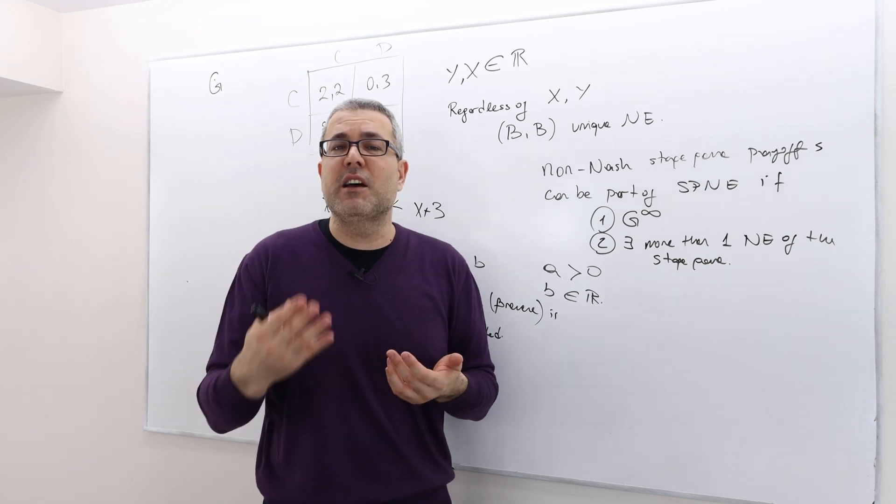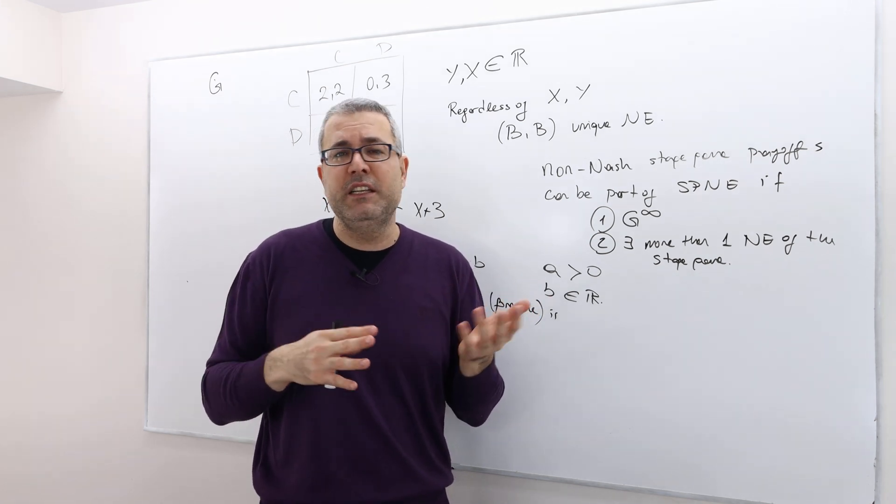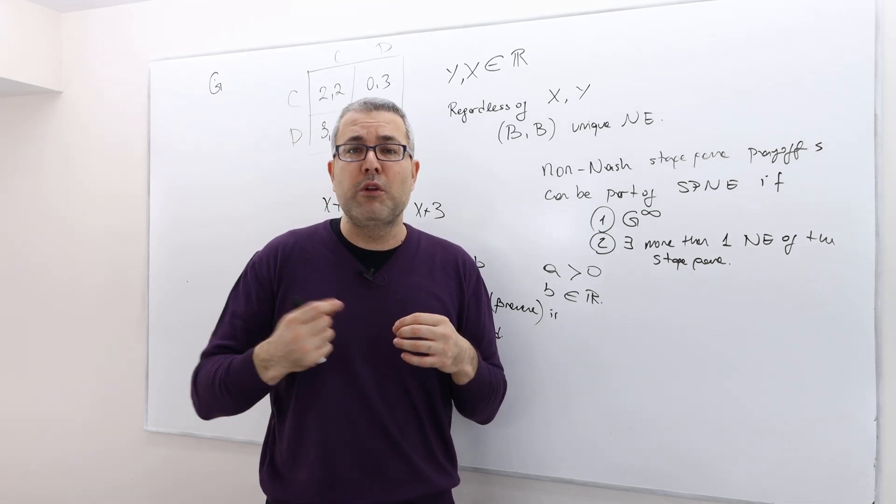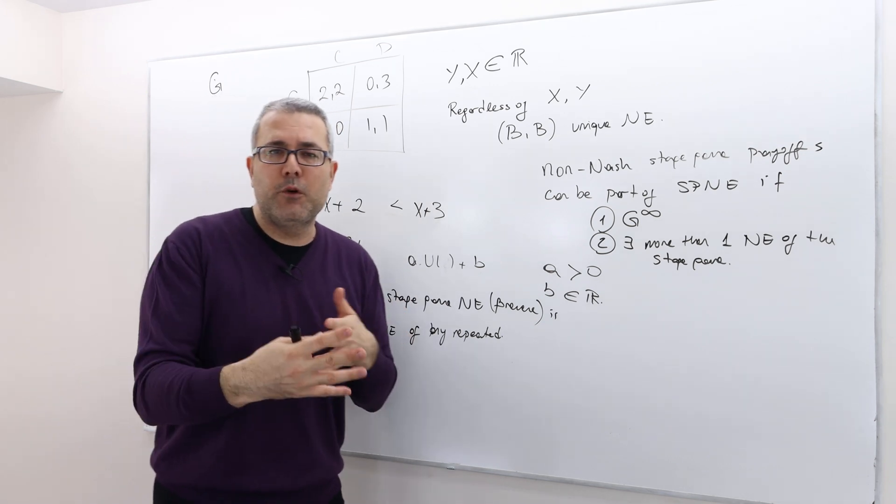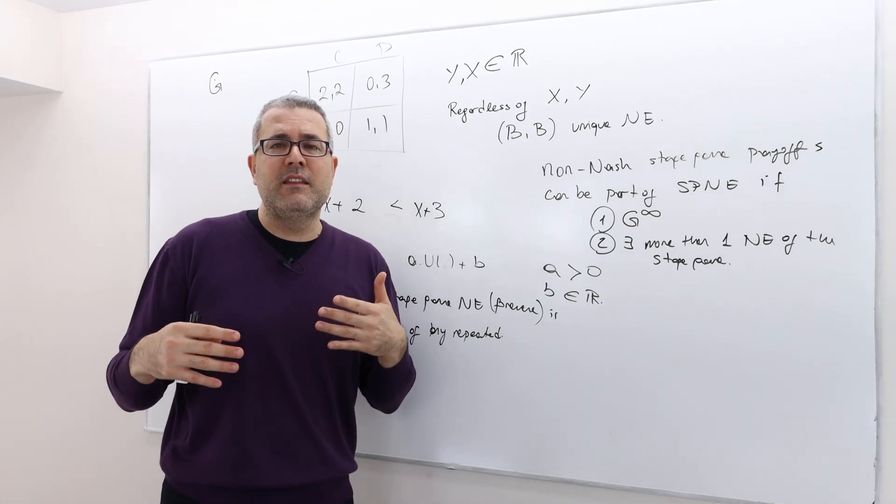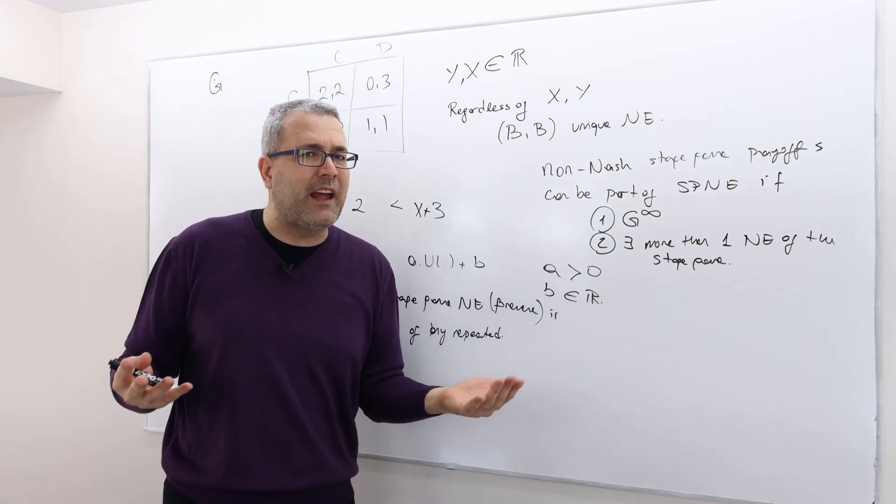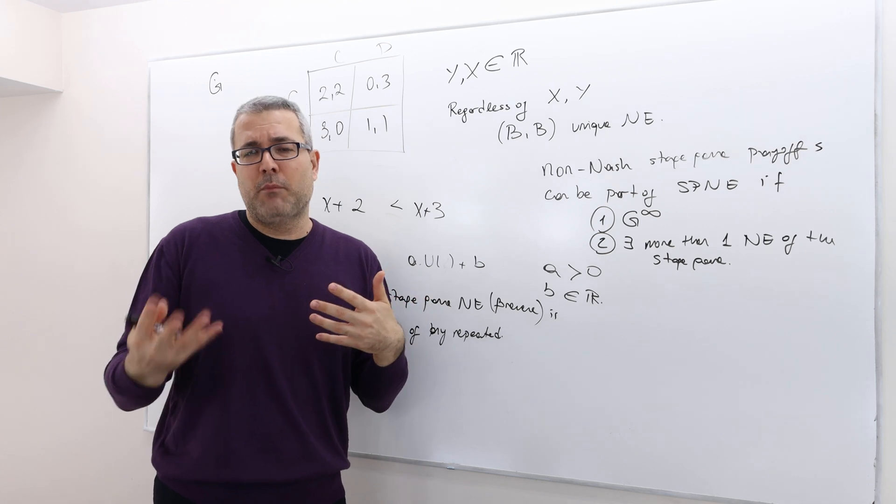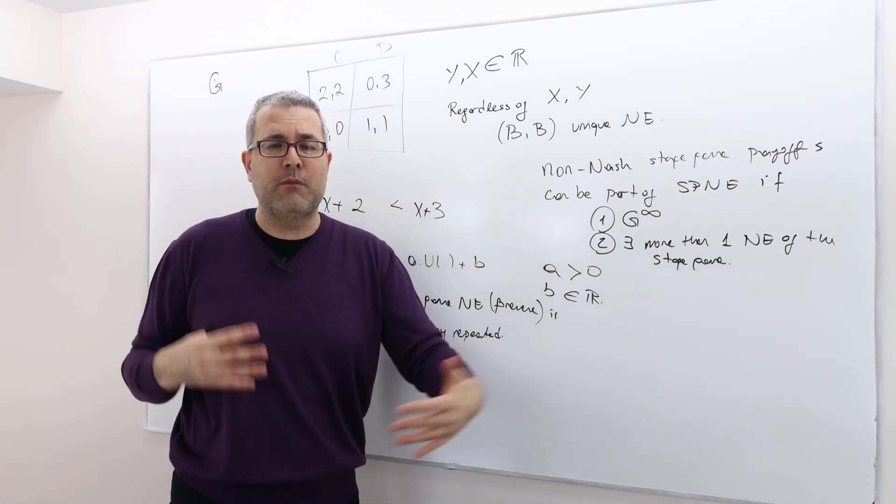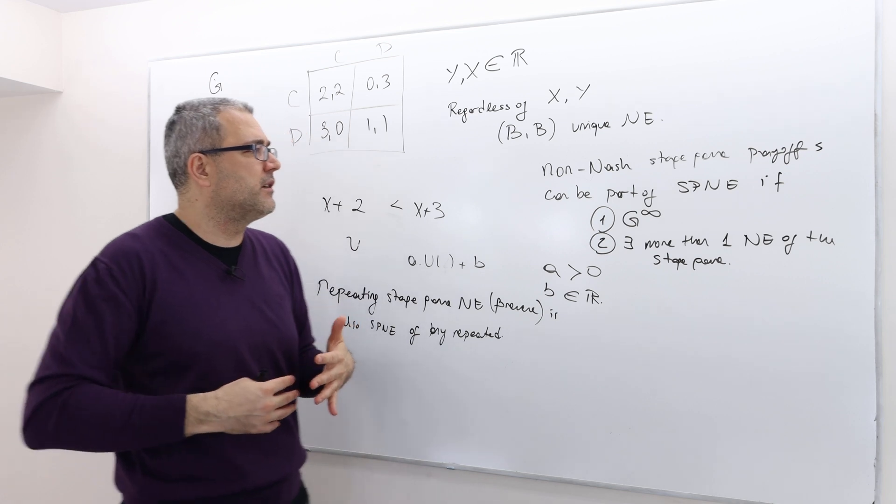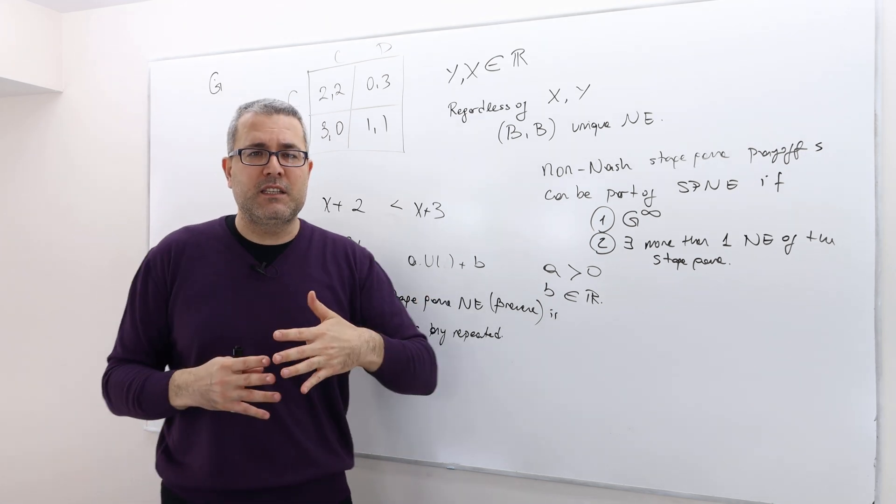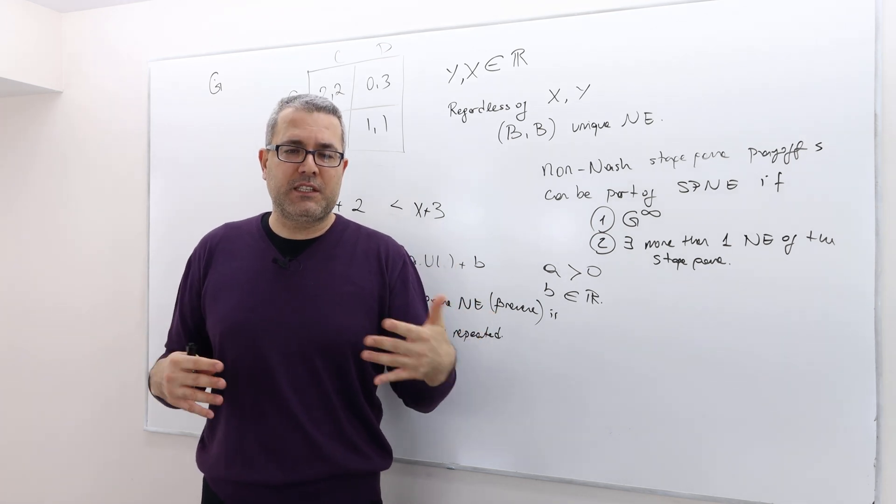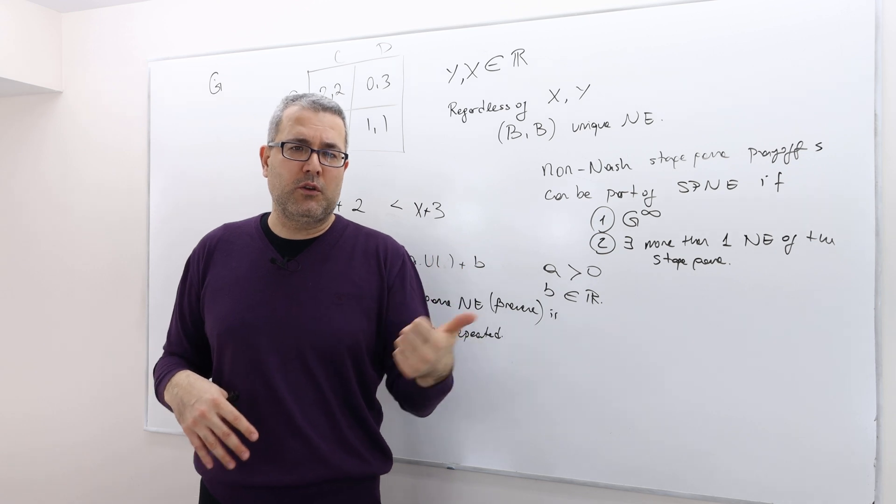In many industrial organization applications during the 1980s and 1990s, they worked very much on repeated games because firms compete with each other and don't really know when this competition is going to end. The best approximation as a modeler is using the infinite horizon repeated game.